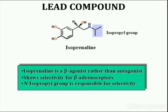The lead compound for the generation of beta blockers was isoproterenol. Isoproterenol is a beta agonist rather than an antagonist. So a question arises: why is this compound used as a lead compound for the generation of beta blockers?